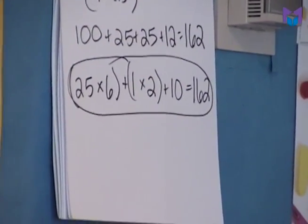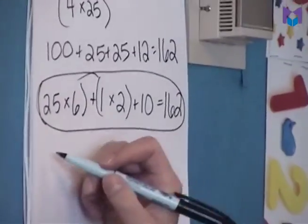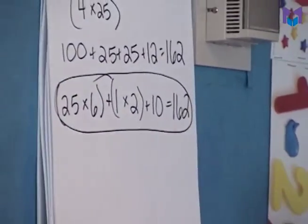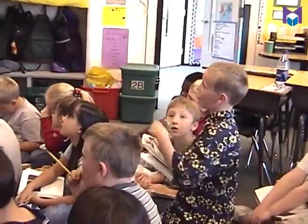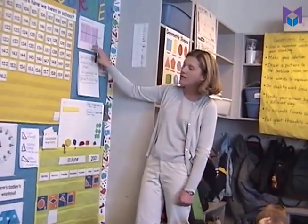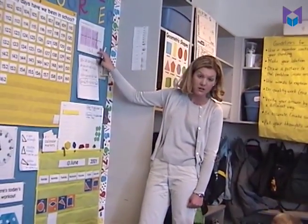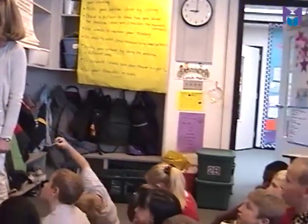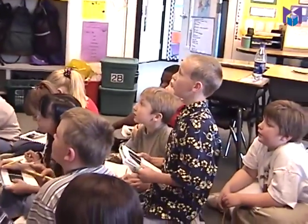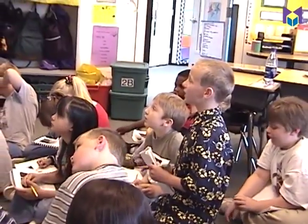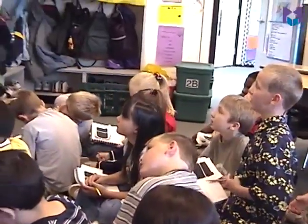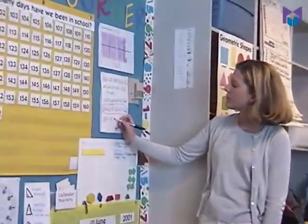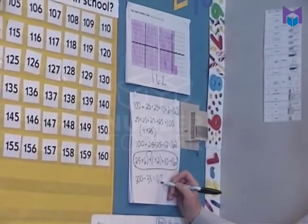I saw 200 take away 38 equals 162. 200 — I'm not clear on where you're saying 200. Can you clarify that? 200 is the whole thing. So you're saying we're going to start out with 200. Does everybody see how Riley is saying that? And then I got the 38 from it — because there are 38 empty squares and you're taking it away from the 200, and then you'll have 162 left.